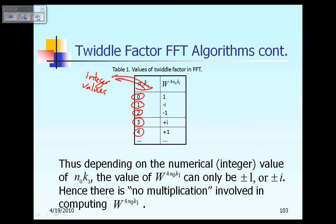If the product of N0 times K1 equals 0, then W raised to that power is equal to 1. On the other hand, if the product N0 times K1 equals 1, then W raised to the power 4N0K1 will be equal to minus i.